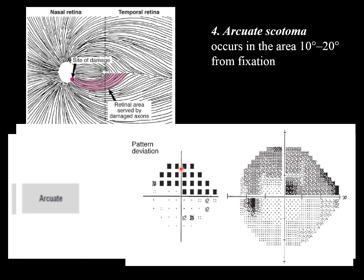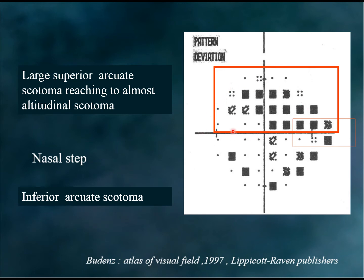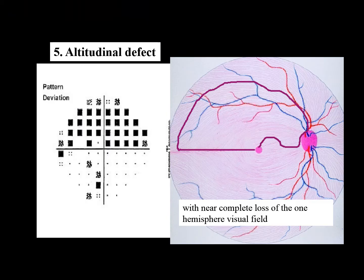The arcuate scotoma can encroach more and more on the rest of the field, reaching almost to an altitudinal defect but not yet complete. Here we have an arcuate scotoma reaching up to altitudinal, plus a nasal step due to asymmetric changes between hemispheres, and an inferior incomplete arcuate. Isolated one or two non-contiguous points are not accepted as true change; points must touch one another to represent a significant area of defect.